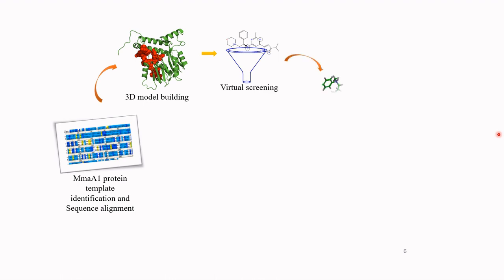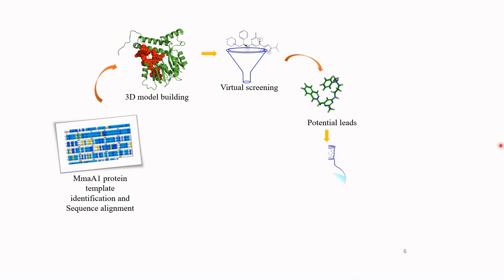After identifying the active site, I took ligand databases and screened the molecules using the Glide docking software. After performing docking, I obtained some lead molecules. I then analyzed the protein-ligand complexes to understand how interactions between the protein and ligand were taking place — studying binding affinity, hydrogen bonding interactions, pi-pi interactions, and van der Waals interactions.